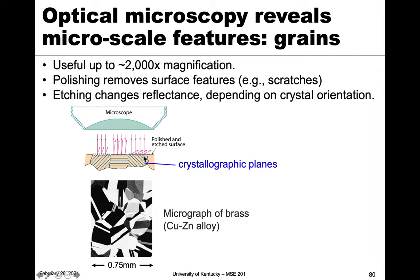Not only are grain boundaries affected by the etchant, but differences in grain or plane orientation can also produce the same contrast. This is a real image of brass which shows a darkened grain alongside a lighter grain.